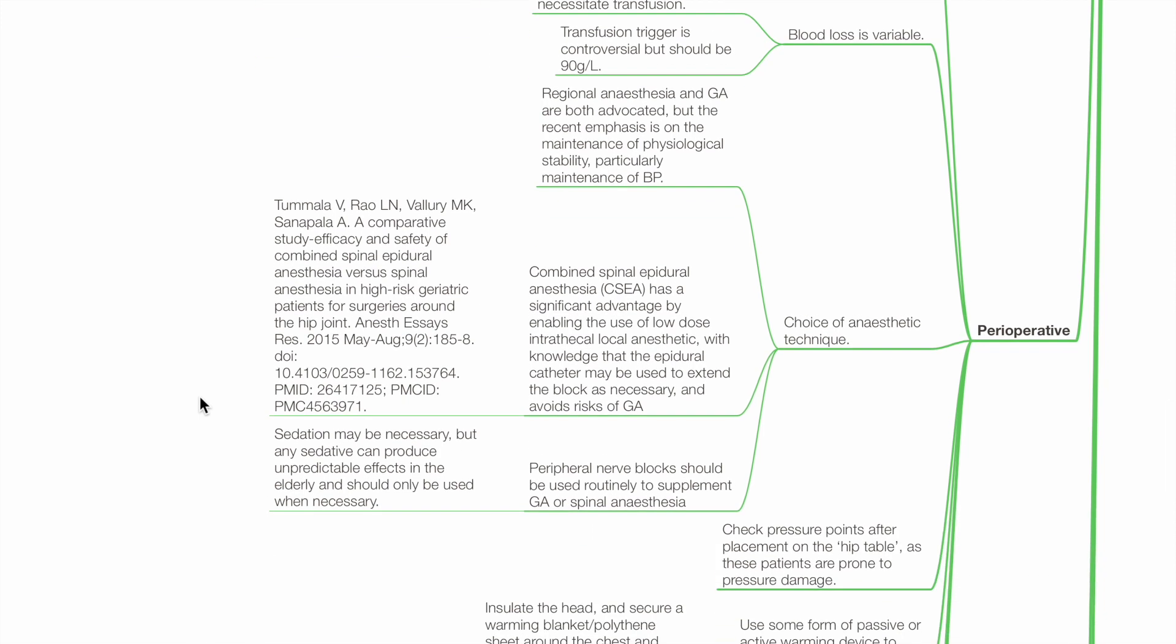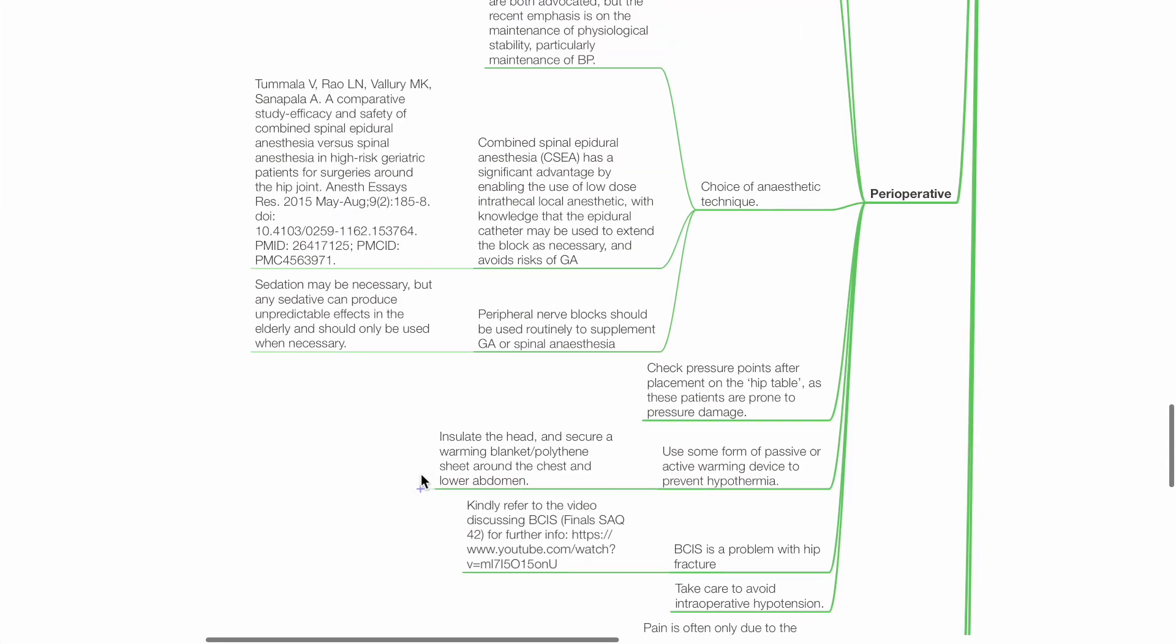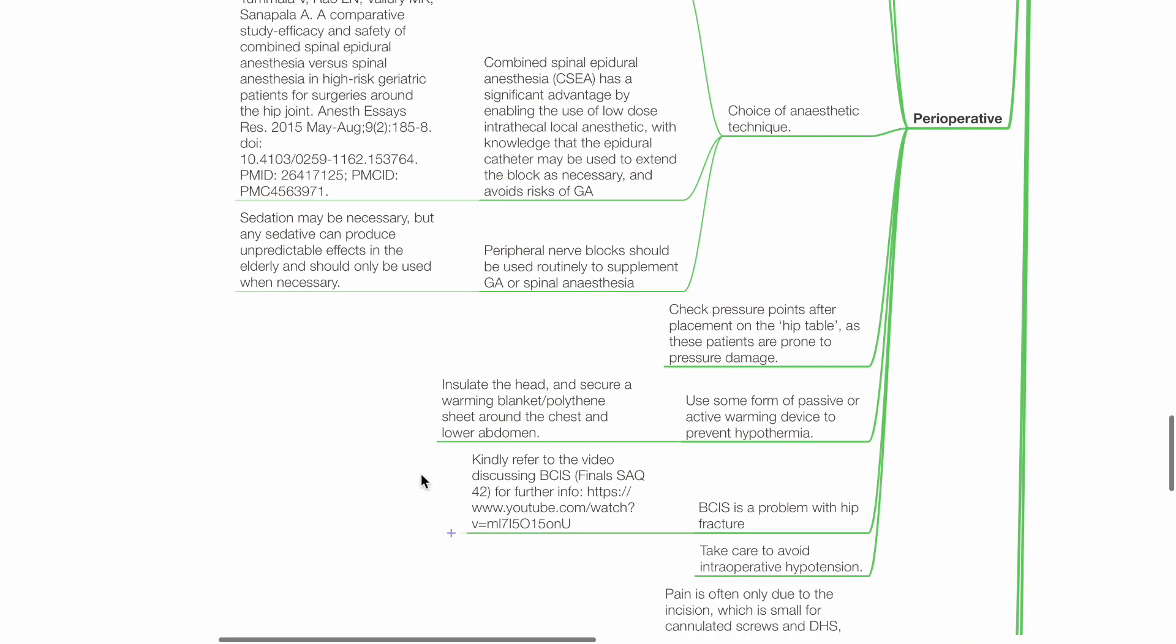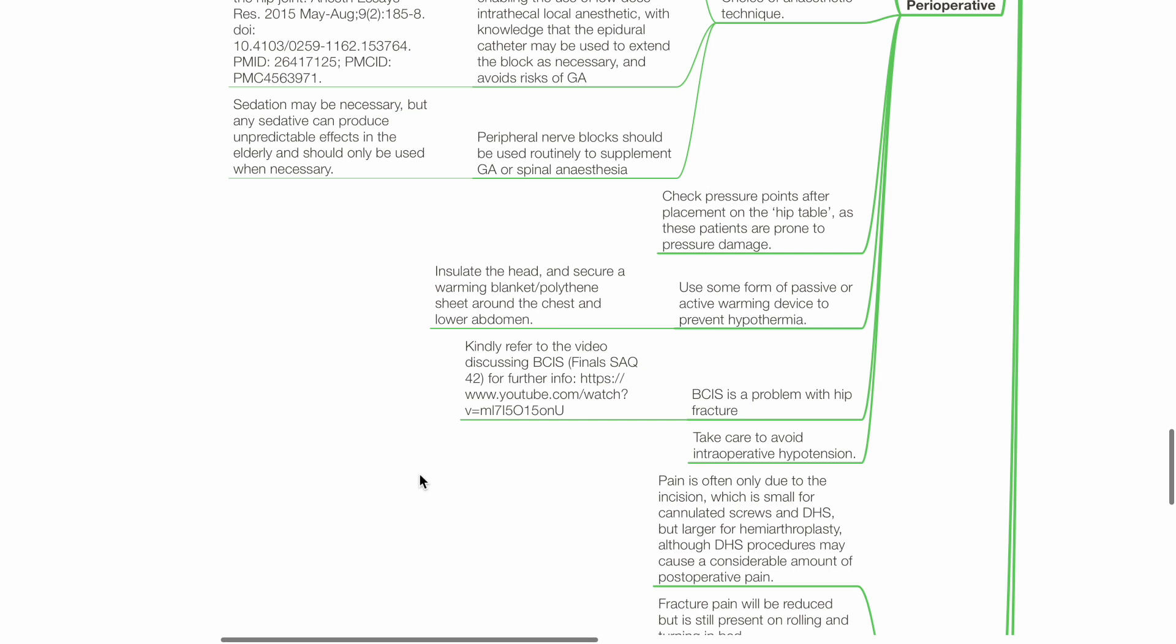Choice of anesthetic technique. Regional anesthesia and GA are both advocated but recent emphasis is on maintenance of physiological stability, particularly blood pressure. Combined spinal epidural anesthesia has a significant advantage by enabling the use of low-dose intrathecal local anesthetic which reduces the risk of hypotension with knowledge that the epidural catheter may be used to extend the block if necessary and CSE also avoids the risk of general anesthesia. Peripheral nerve blocks should be used routinely to supplement GA or spinal anesthesia when indicated. Sedation may be necessary but any sedative can produce unpredictable effects in the elderly and should only be used when necessary. Check pressure points after placement on the hip table as these patients are prone to pressure damage. Use some form of passive or active warming device to prevent hypothermia.